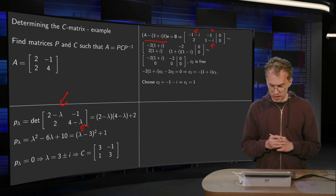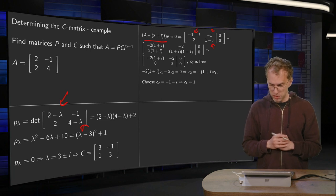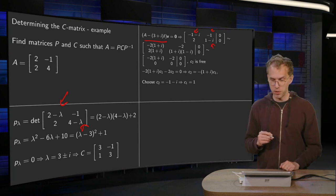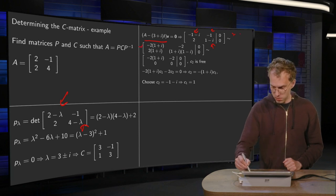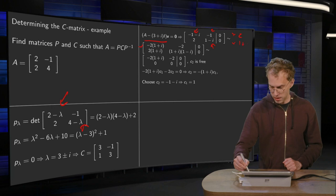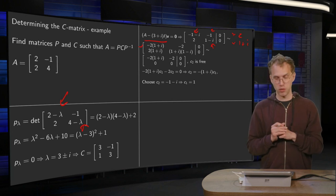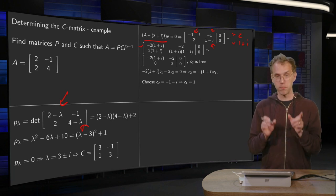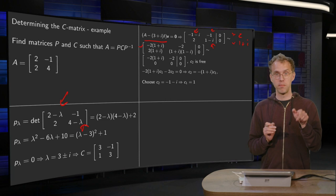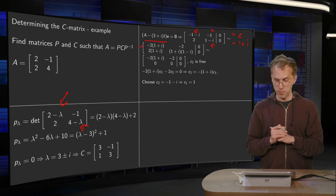Now this complex row reduction is also always a bit annoying. So what I did here is I multiplied the last row by 1 plus i and I multiplied the first row by a factor of 2 in order to make the numbers in the first column the same. So times 2 here and times 1 plus i over here. And then you see that the numbers in the first column are the same, apart from a sign. And in the second column as well, because we have (1 plus i) times (1 minus i) equals 2.